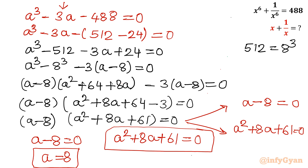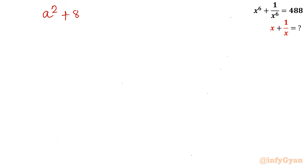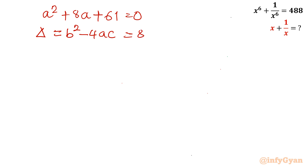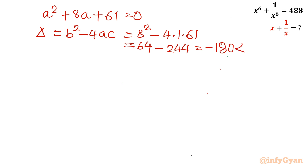Checking the discriminant: Δ = b² − 4ac = 8² − 4(1)(61) = 64 − 244 = −180. Since the discriminant is negative, the quadratic gives only complex solutions, which we reject. So this case is discarded.